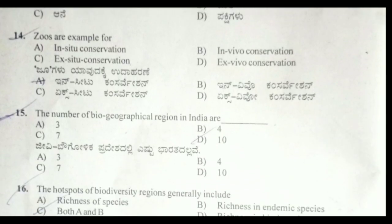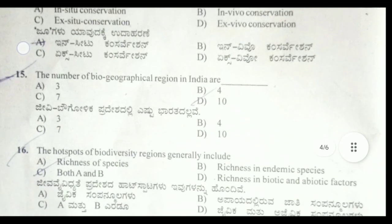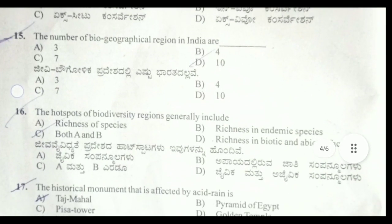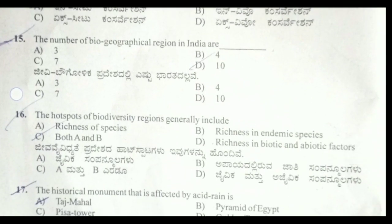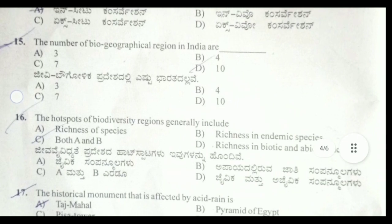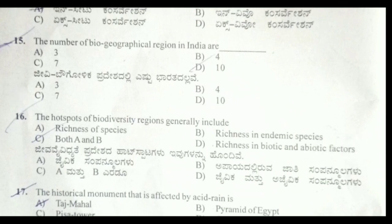Thirteenth/fourteenth question: zoos are an example of ex-situ conservation. Option C is the correct answer. The number of biogeographical regions in India is 10, option D.